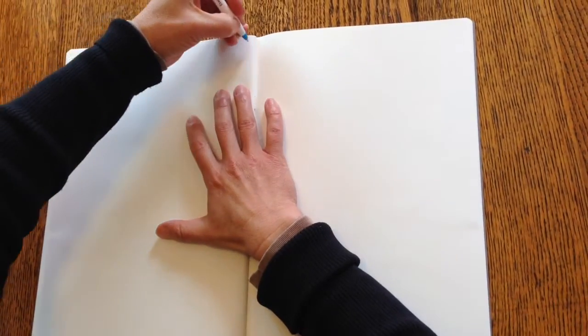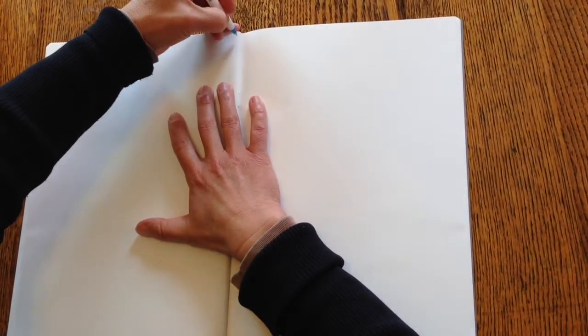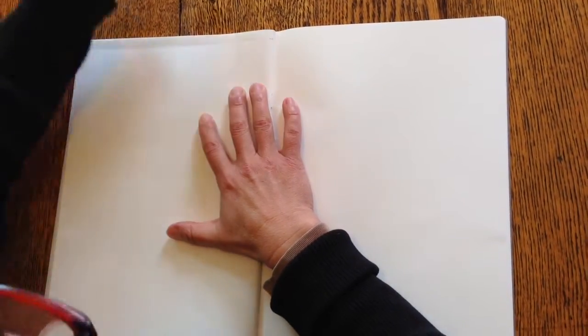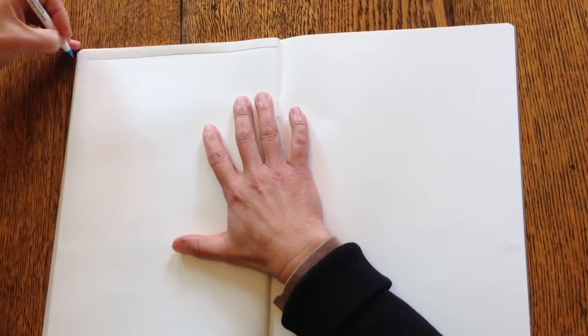And the way I usually start a doodle is I like to have a border because—let me get my pen, my regular old ballpoint pen working.